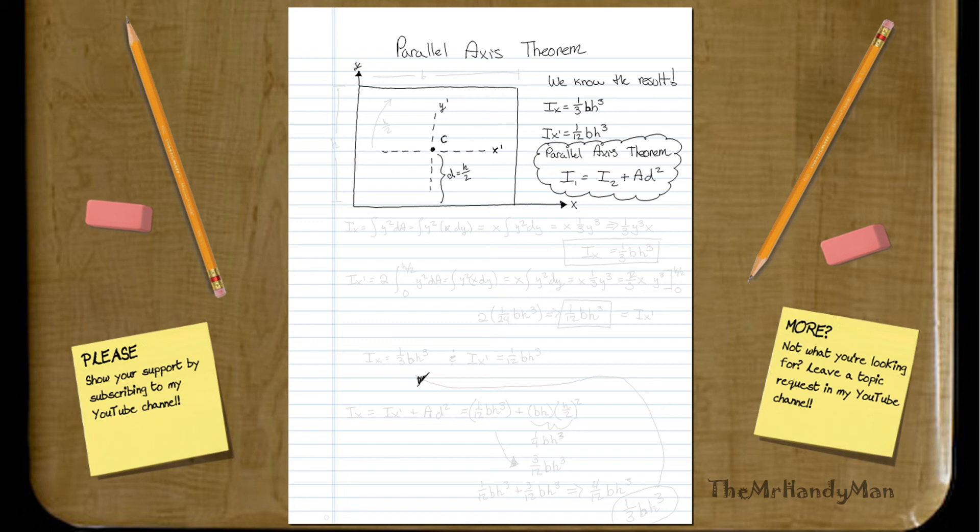First of all, what we have here is we have a box, which is obviously the height of h total, and the width, the base is the width. So what I want us to do here is, first of all, determine that ix and ix prime that we already tabulated, that's in the upper right, are correct.